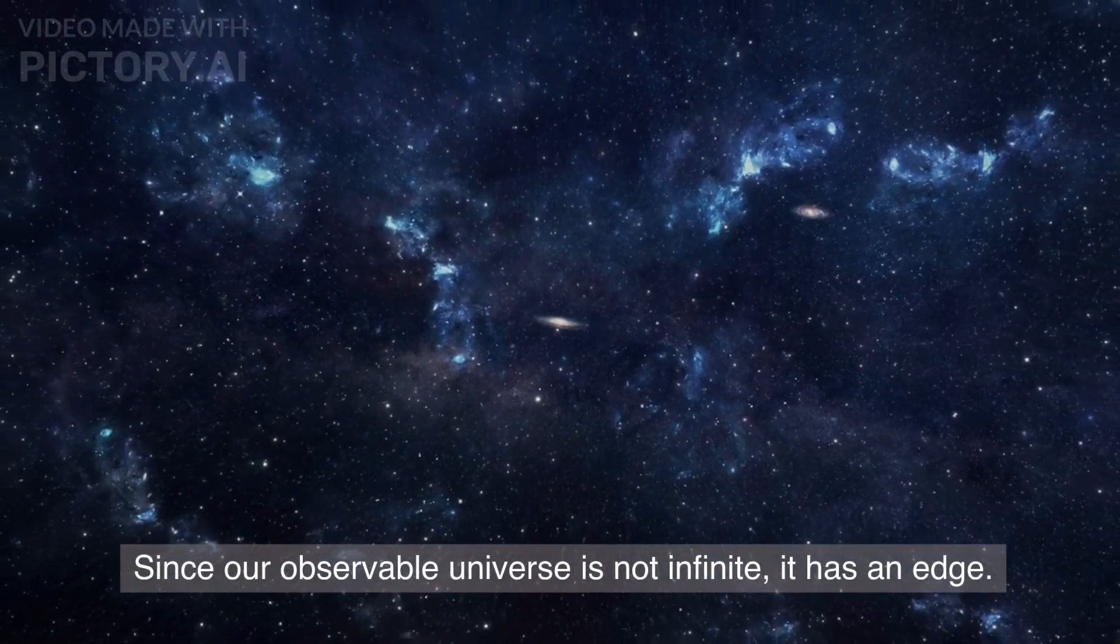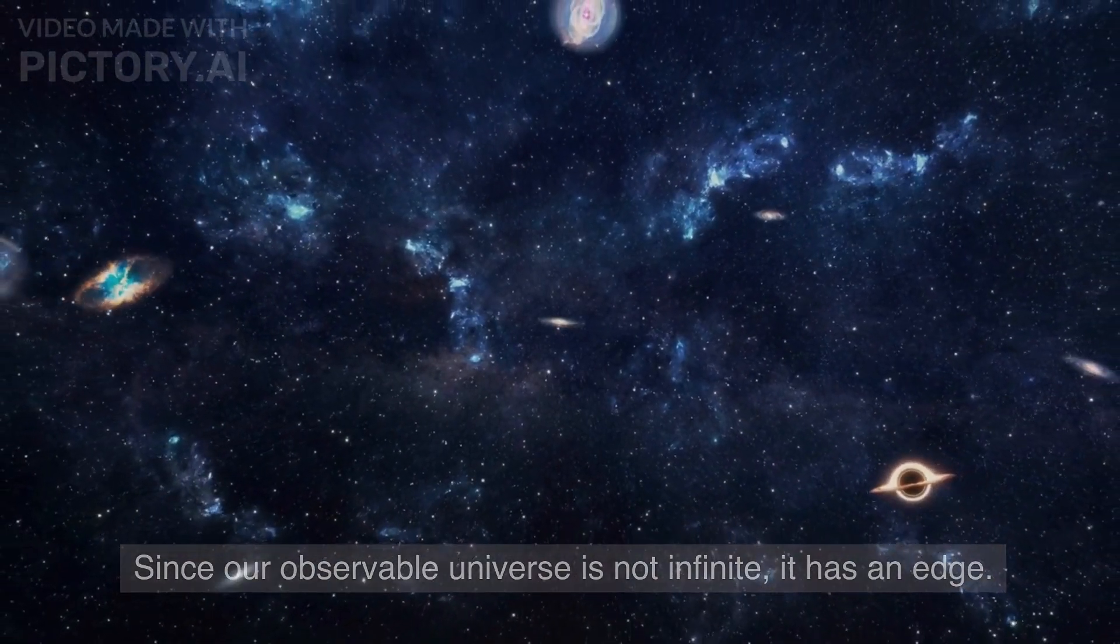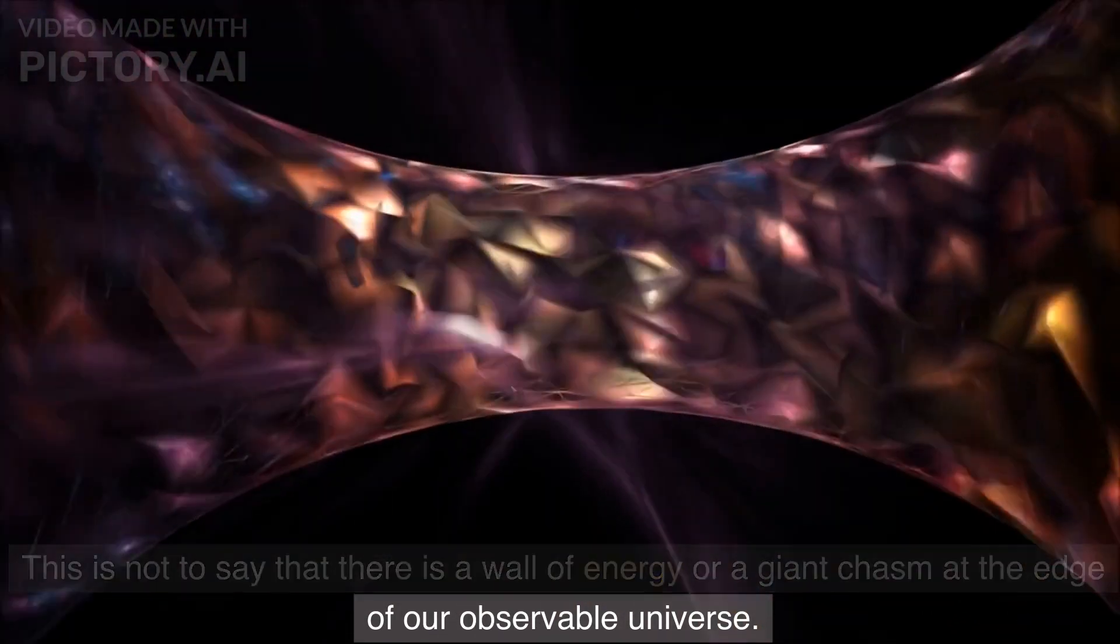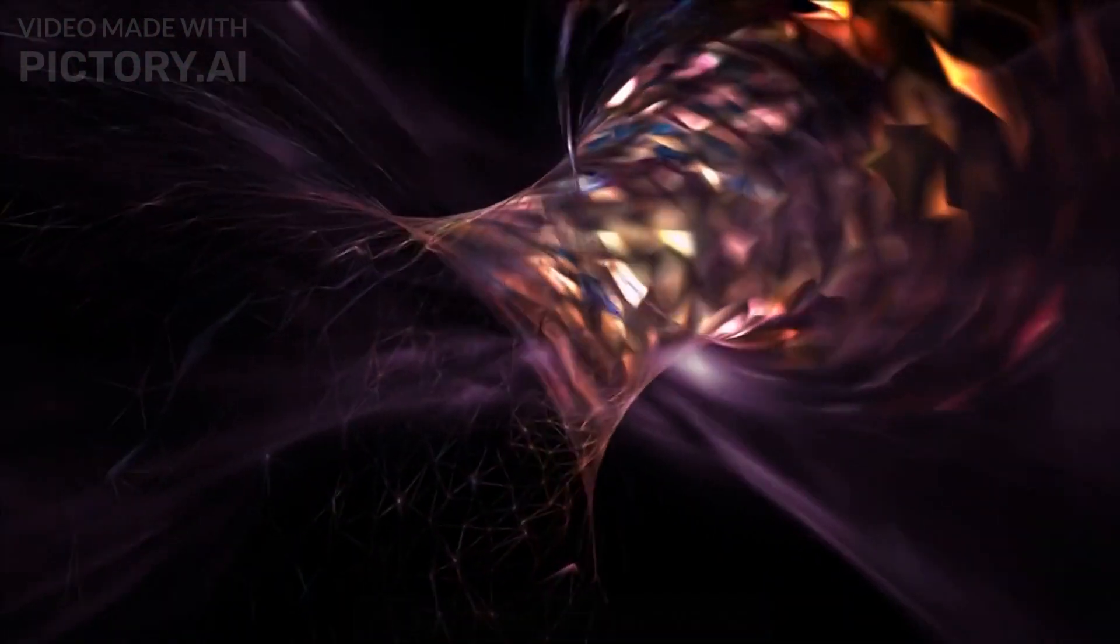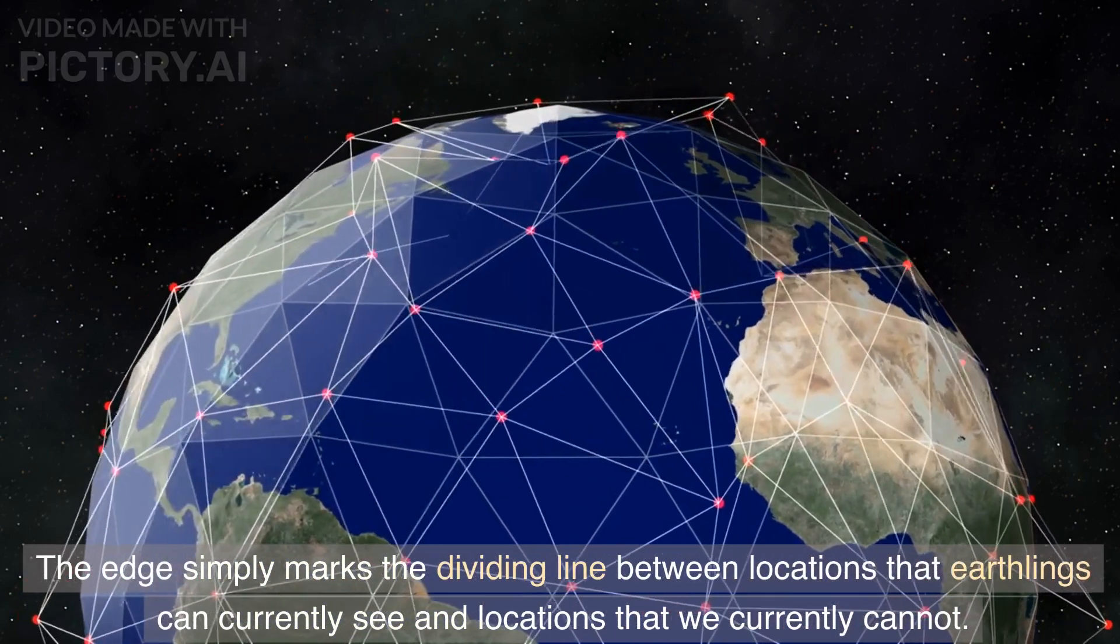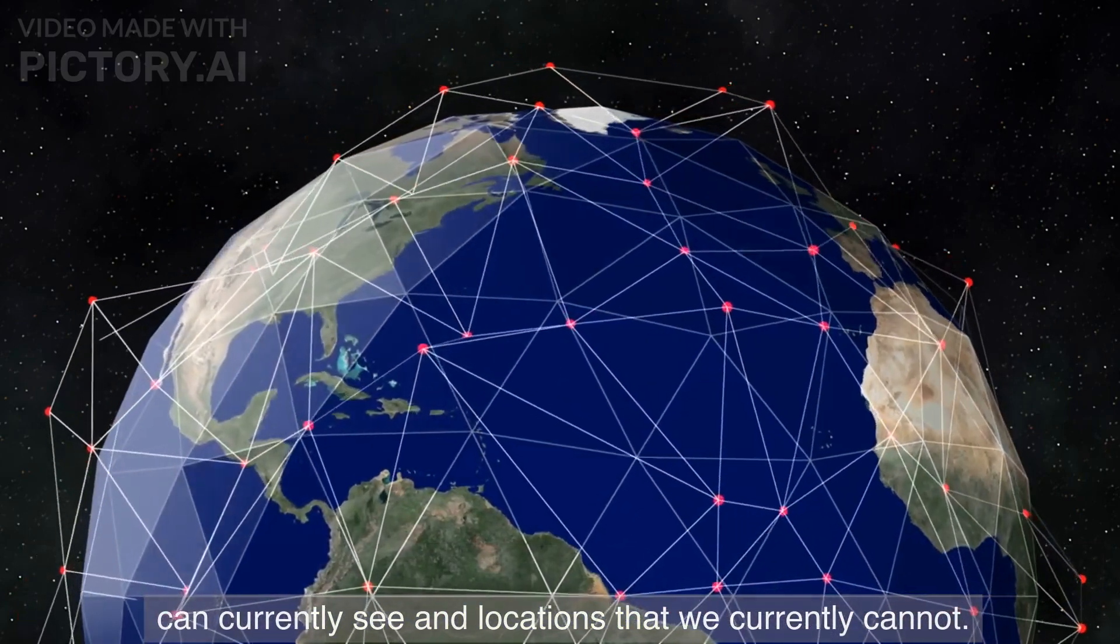Since our observable universe is not infinite, it has an edge. This is not to say that there is a wall of energy or a giant chasm at the edge of our observable universe. The edge simply marks the dividing line between locations that Earthlings can currently see and locations that we currently cannot.